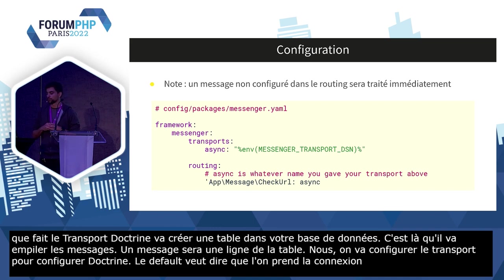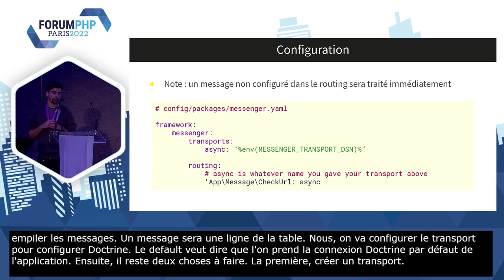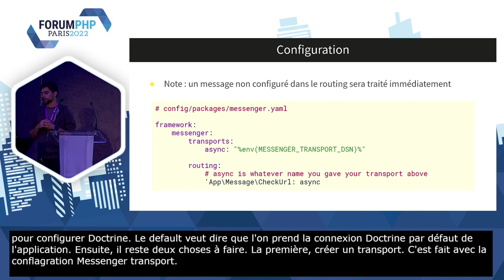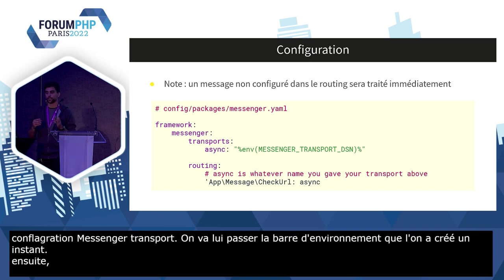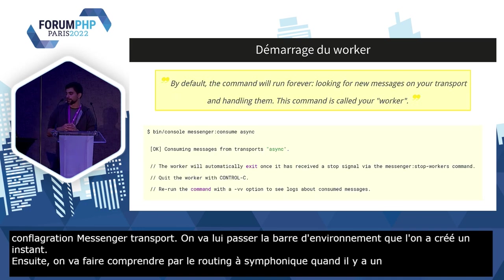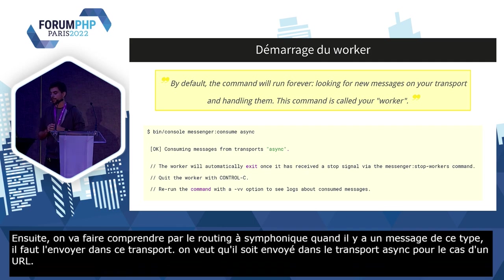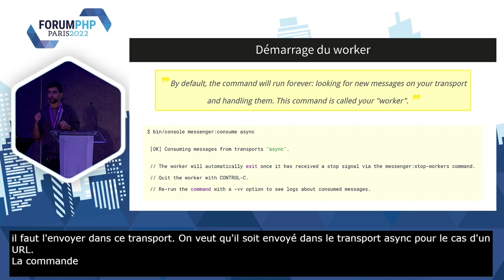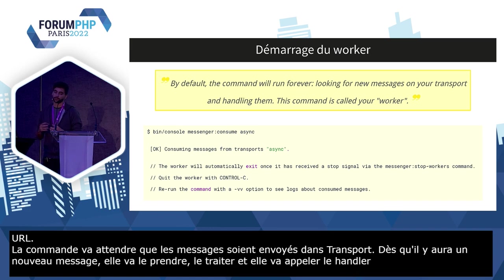Il nous reste deux choses à faire. La première, créer un transport avec la configuration Messenger transport, qu'on va appeler async, en lui passant la variable d'environnement configurée. Deuxième chose, configurer le routing, qui permet de faire comprendre à Symfony que quand un message de ce type est envoyé, il doit l'envoyer dans ce transport. Dans notre cas, on veut que le message CheckUrl soit envoyé dans le transport async. Si on lance la commande messenger:consume avec le nom du transport async, cette commande tourne de manière infinie, attend des messages, et dès qu'un nouveau message apparaît, elle le prend, le traite, appelle le handler correspondant, et se remet en attente. C'est notre worker.